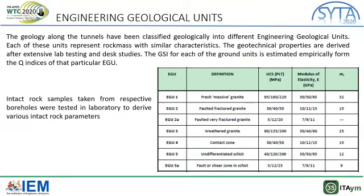The GSI of each ground unit is estimated empirically from the Q indices using the Barton Q system, now maintained by NGI. In the table you can see the various geological units, their definition, and an idea of the modulus and UCS. EGU1 to EGU5A is our distribution — ranging from fresh and massive gneiss to faulted, very fractured, and weathered gneiss. We also have a contact zone transitioning to undifferentiated schist, and a fault or shear zone in schist.